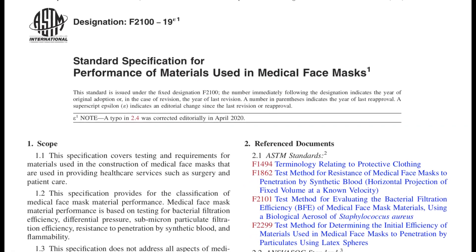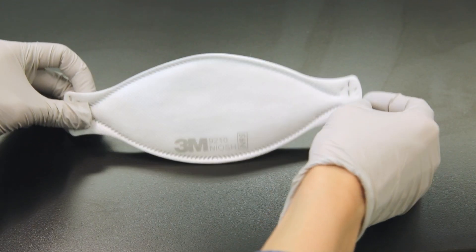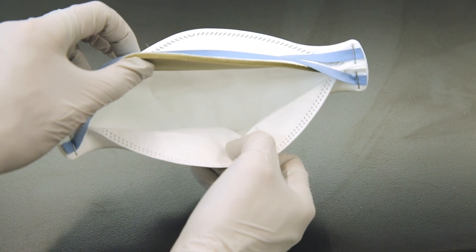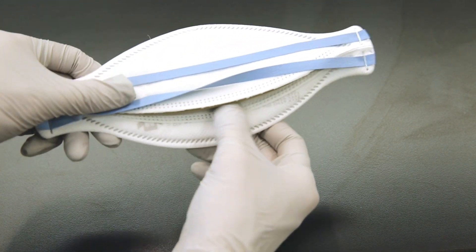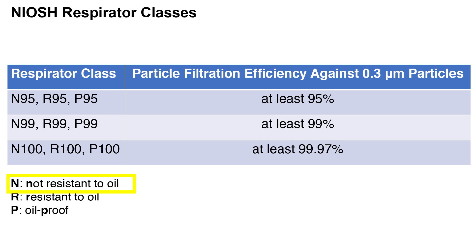According to the F2100 standard, the main differences between level 1 and level 3 medical masks are that level 3 masks have better bacterial filtration efficiency and improved resistance to fluids such as blood. N95 respirators have to meet the specifications established by the National Institute for Occupational Safety and Health, NIOSH. The number 95 means that it is capable of filtering out 95% or greater airborne particles, and the letter N means that it is not resistant to oil.